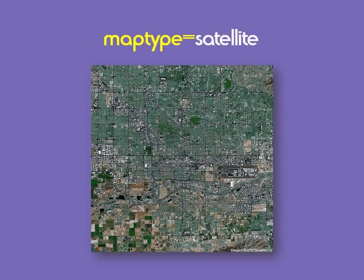The next type is the satellite map. The parameter here is maptype=satellite, and this generates a basic satellite map based on our other parameters. As you can see here, this is a satellite map with no overlays, so we don't have any roads labeled, no cities labeled, nothing.